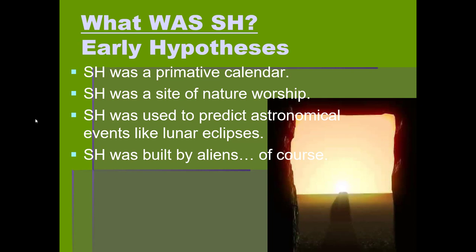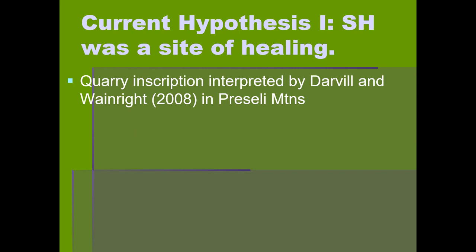Other people argue that Stonehenge was built by aliens. One proponent, Eric Von Däniken, wrote a book called Chariots of the Gods in the 1960s, arguing that aliens came to Earth and gave certain cultures — including the Stonehenge builders, the Egyptians, the Mayans, and the Easter Island culture in the South Pacific — the knowledge to build these amazing monuments, and then took that knowledge with them when they left. Moving on to hypotheses that do have some research behind them...